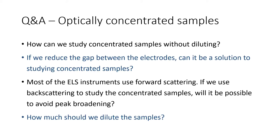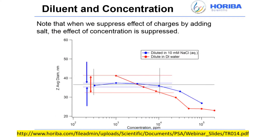Question: how much should we dilute the samples? Hariba has a very nice guide on this subject, available at the link shown at the bottom. This is for particle sizing via dynamic light scattering, but the concept is the same for zeta potential using electrophoretic light scattering from the same instrument. Just consider zeta potential instead of z-average diameter.